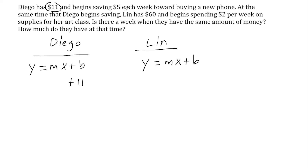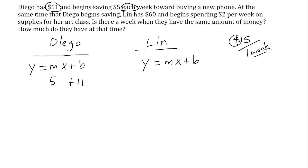The terminology 'each' indicates a rate. We can write $5 each week as $5 per individual week, which is 5 over 1. Since 5 over 1 simplifies to 5, we substitute m — our slope — with 5, understanding that it's really 5 over 1. Slope is a rate, a comparison of two units: in this case, money compared to time in weeks. We write variable x after our slope of 5. Plugging in the number of weeks and multiplying by 5, then adding the $11 he started with, gives us y — how much money he has in total. This equation represents Diego's situation.